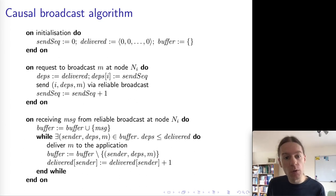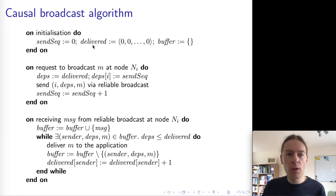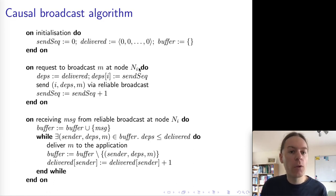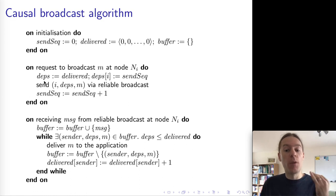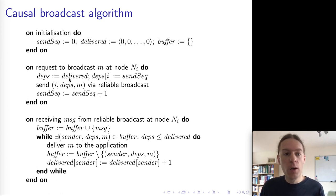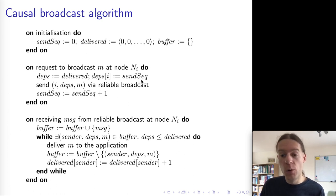Next, let's have a look at causal broadcast. The algorithm structure is very similar. We start with the same three variables: a sender sequence number, a vector counting the number of delivered messages, and the holdback buffer. When we want to broadcast a message at n_i, we create a new variable called dependencies, which captures the causal dependencies of this message — that is, which messages happened before this particular message and must be delivered before it. We take dependencies to be a copy of our delivered vector, and update the broadcasting node's own entry to be equal to the sequence number. Then we send the message via reliable broadcast, attaching this dependencies vector along with i, the index of the node. Then we increment the sender sequence number as before.